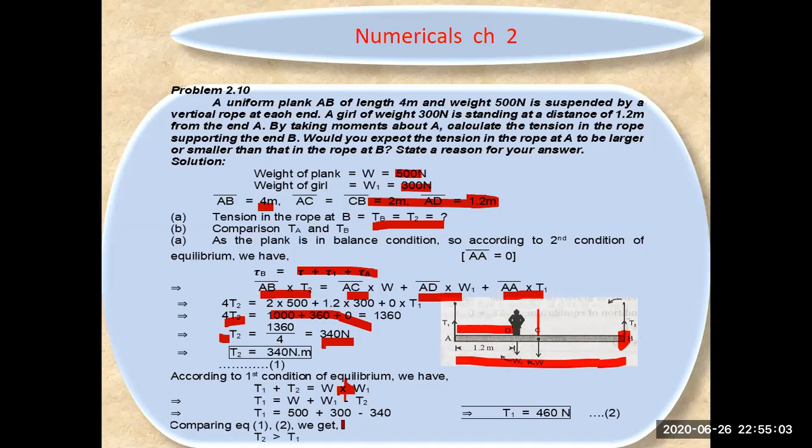Applying these equations, we get T1 equals 460 Newtons, which clearly shows that T1 is greater than T2. By using the conditions of equilibrium, you can calculate where the tension will be more and where it will be less.